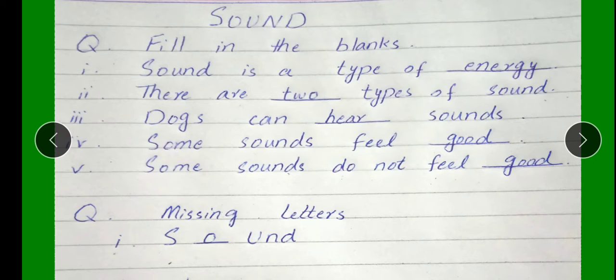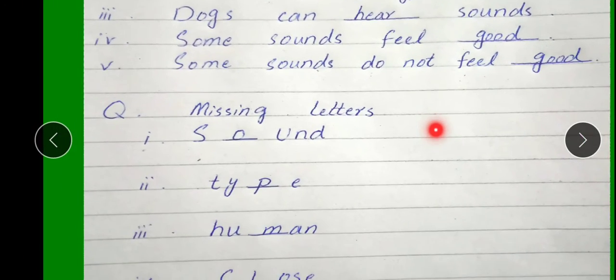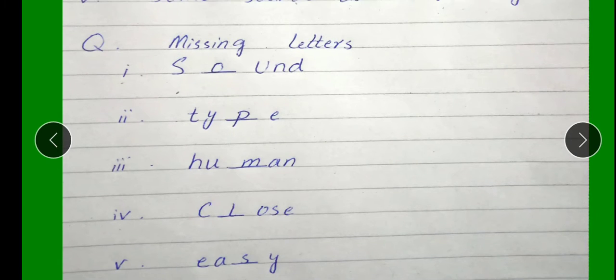Good. Second question is missing letters. Number 1: S-O-N-D O. Sound, Sound mean? Awaaz. Number 2: T-Y-E Type P.